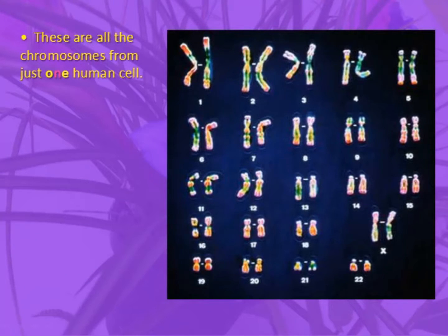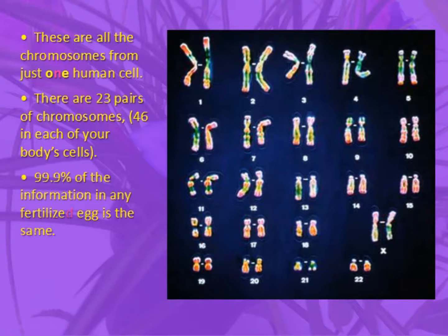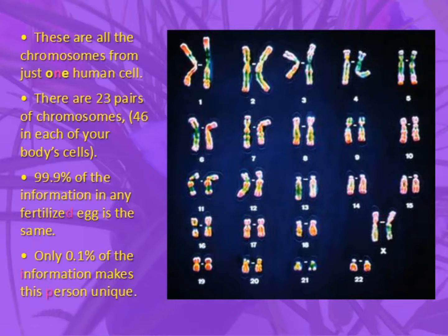Here are the 23 pairs of chromosomes that come from just one human cell and are in every body cell of a human. There are 23 pairs, which means 46 chromosomes. They are numbered 1 to 22 and then there is one labeled X, which we'll talk about very shortly. 99.9% of your genetic information is the same as every other human being on the planet — it is just 0.1% of the information that makes you unique.